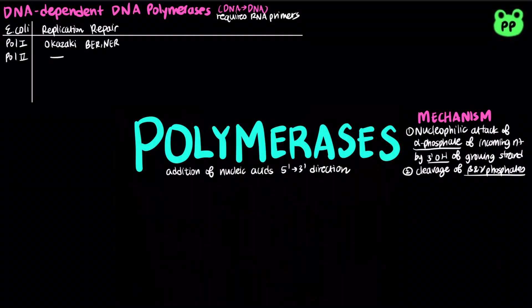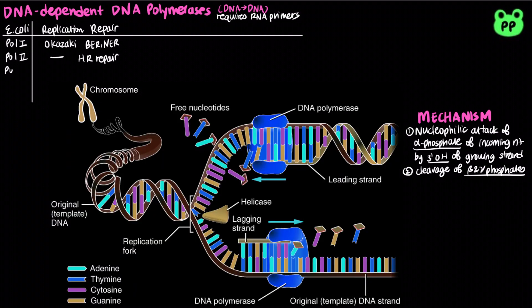DNA polymerase 2 functions in recombinational repair. DNA polymerase 3 is the primary enzyme involved in DNA replication, and it is also involved in mismatch repair.